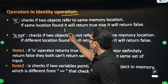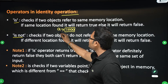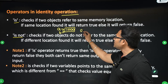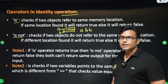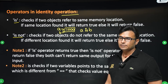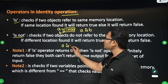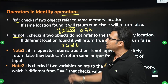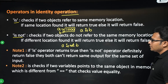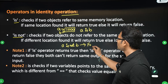Let's say there is an object whose value is 1000, and both a and b are referring to the same object. In this case, if you write 'a is b', it will return true, because both of them are pointing to the same object. Now, if you write 'a is not b', it will return false.